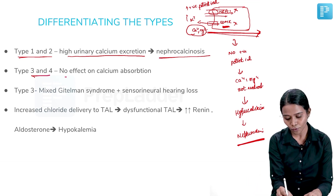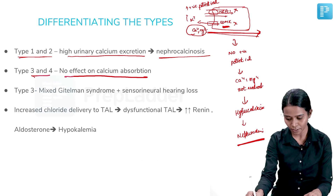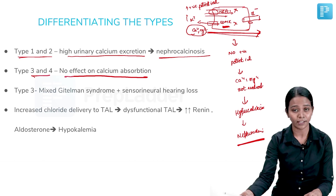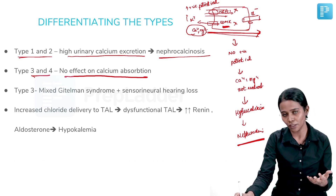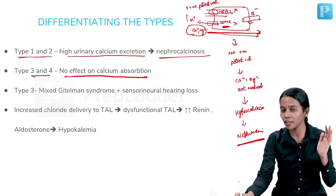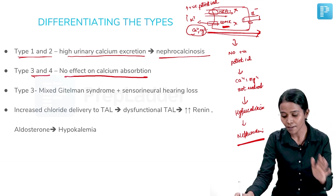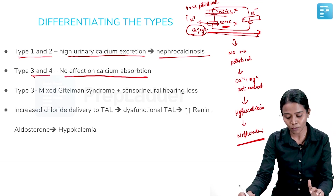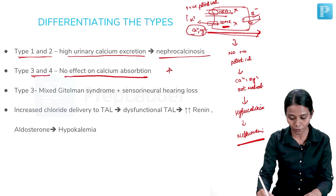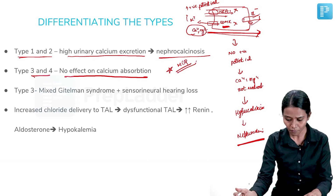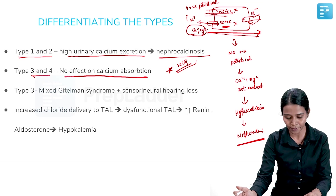Types 3 and 4 are based on the chloride channel defect and have nothing to do with the cation transport or lumen electropositive potential. Therefore, anything involving the chloride channel or Barttin will not cause nephrocalcinosis. This point is very important and has been asked as an MCQ multiple times.